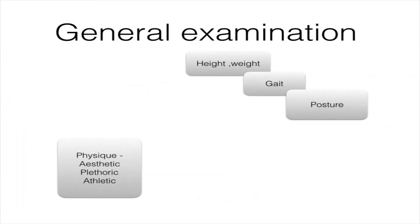The next is general examination. We record the height and weight of the patient to know the growth status. The gait — the way the patient walks — and posture are also very important. We also record the physique of the patient, whether they are asthenic, phlethoric, or athletic.